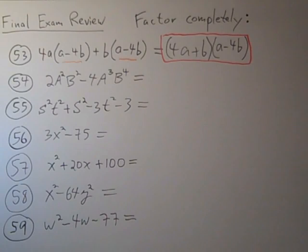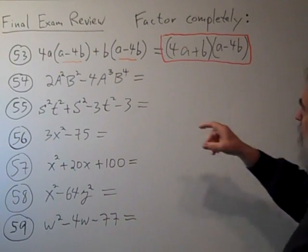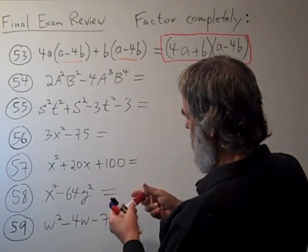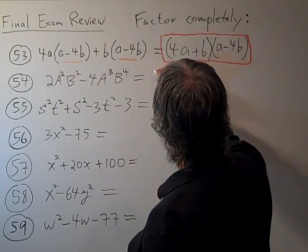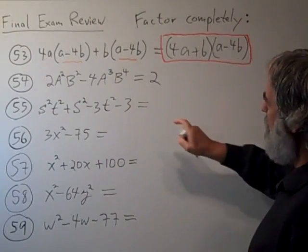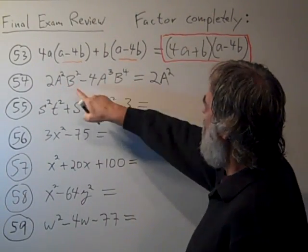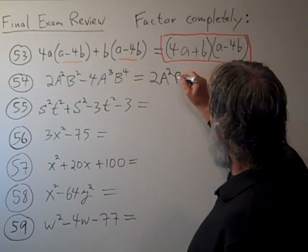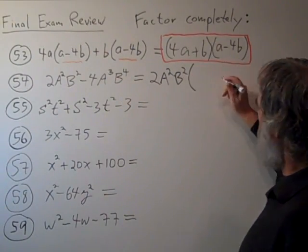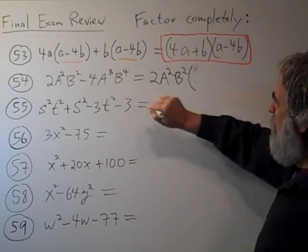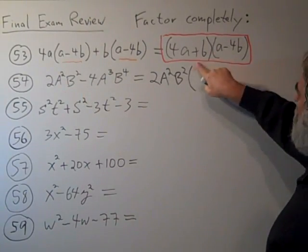For the second problem here, problem number 54, first look at the coefficients. There's a 2 and a 4, so we can factor out a 2 from the whole thing. In the a, there's a squared and a cubed, so you can factor out a squared. There's a b squared and a b to the 4th, so you can factor out a b squared. And now you have to figure out what is needed to equal this when you distribute this through the parentheses.